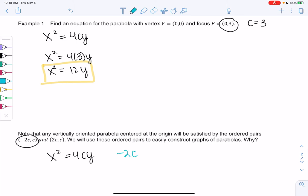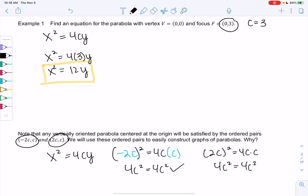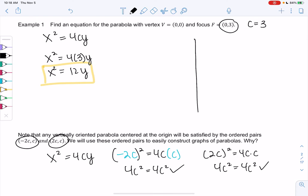And it looks like we get 4c squared equals 4c squared. So that's a point. What about 2c squared equals 4c times c? Plugging in the second point, we still get 4c squared equals 4c squared. Cool. So let's actually graph example one before we move on, just so we can see these new properties.